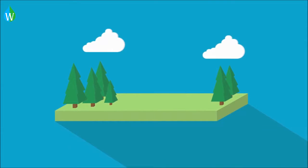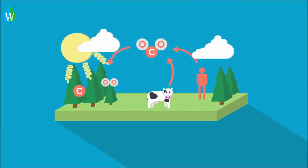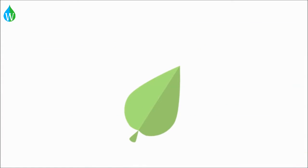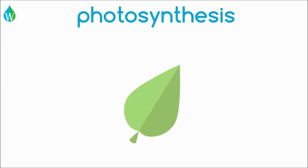First of all, the natural carbon cycle. Can you remember what the process is called where plants capture carbon and give off oxygen? Pause the video whilst you think. Did you remember that this process is called photosynthesis?